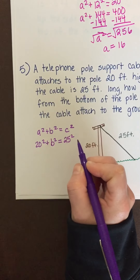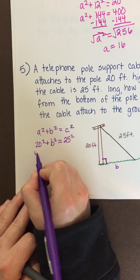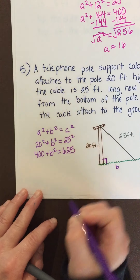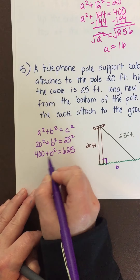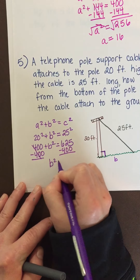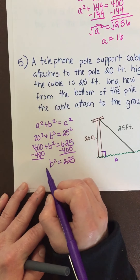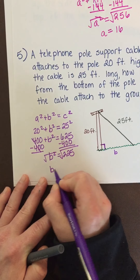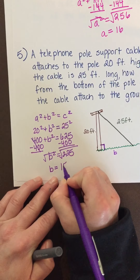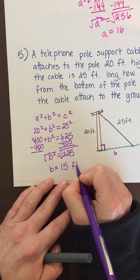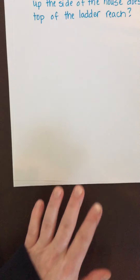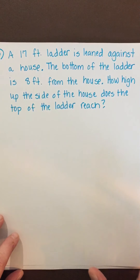20 squared is 400 and 25 squared is 625. Subtract 400 from both sides: b squared equals 225. Take the square root of both sides — since we're dealing with a measurement, we only use the positive value. The square root of 225 is 15, so the cable is 15 feet from the bottom of the pole.